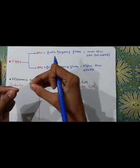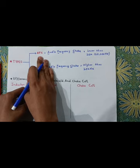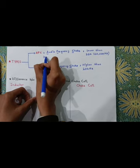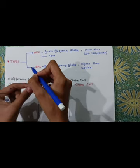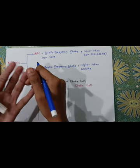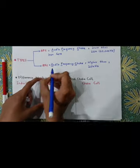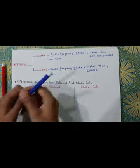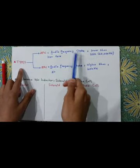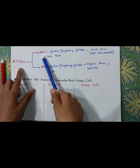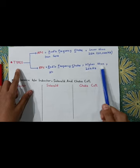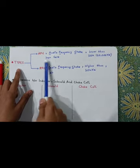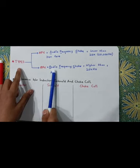For AFC, we use an iron core so that we can concentrate and maximize the inductance. If we have a wounded coil, we insert an iron core so the inductance of the AFC is maximum and it works with more efficiency. For RFC — Radio Frequency Choke — an air core is used. AFC is used to block frequencies lower than 20,000 Hz, while RFC is used to block frequencies higher than 20,000 Hz. AFC uses an iron core to concentrate inductance, whereas RFC uses an air core.